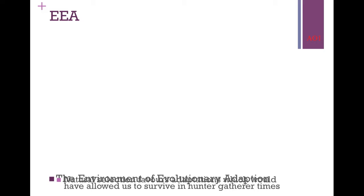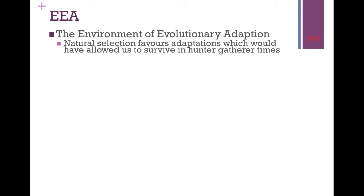The idea here comes from something known as the environment of evolutionary adaptation. As with most evolutionary perspectives, it says that we have the behaviours we have now because they would have allowed an adaptive advantage in some situation. We can apply that to food preference and ask why we eat what we eat, why we have certain preferences. You need to know about this environment of evolutionary adaptation — that's the environment our ancestors evolved in.